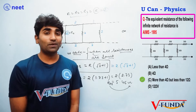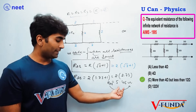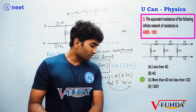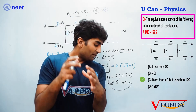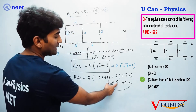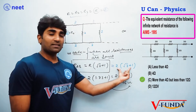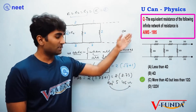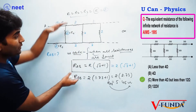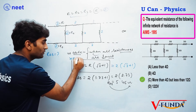Now check your options. Option: less than 4 ohm — this is not 4 ohm, so that's incorrect. Next option: more than 4 ohm but less than 12 ohm — yes, correct! Because option D is 12 and our answer 5.46 lies between 4 and 12. So this is your correct answer. The main thing is how easily you can solve this problem using just this one relation.